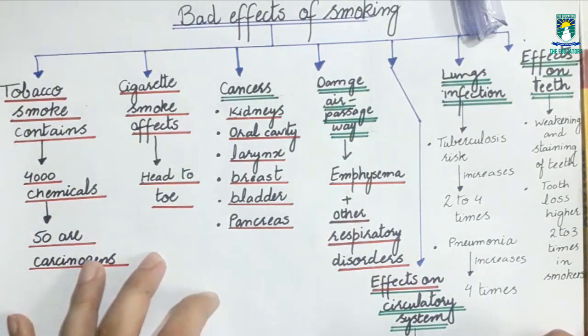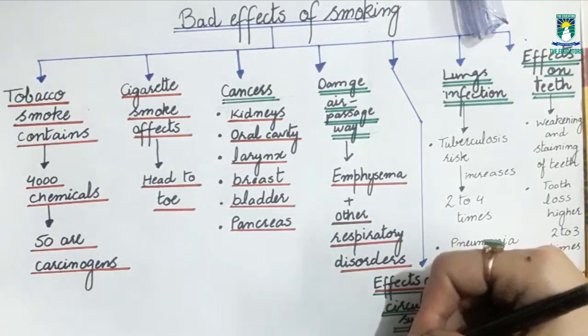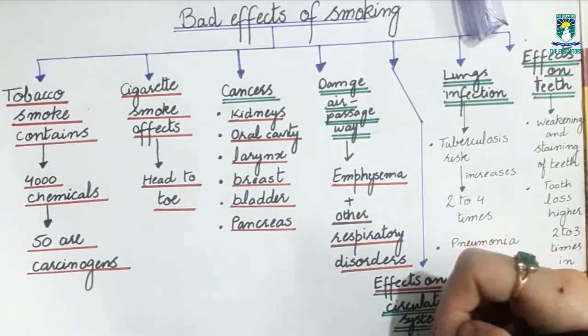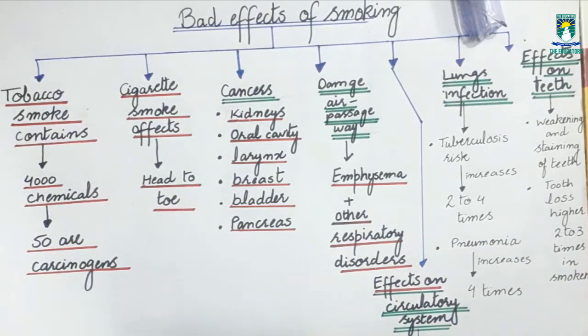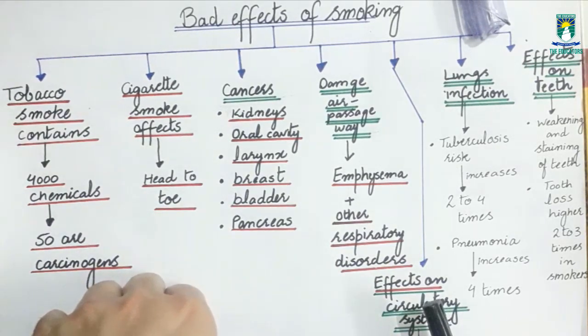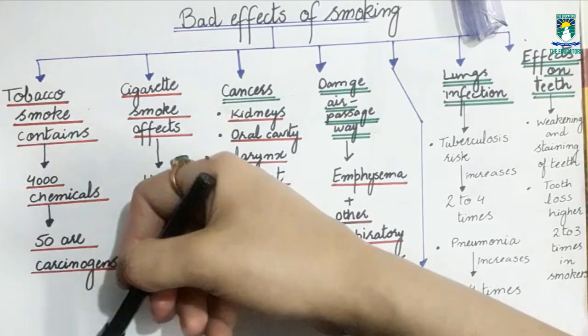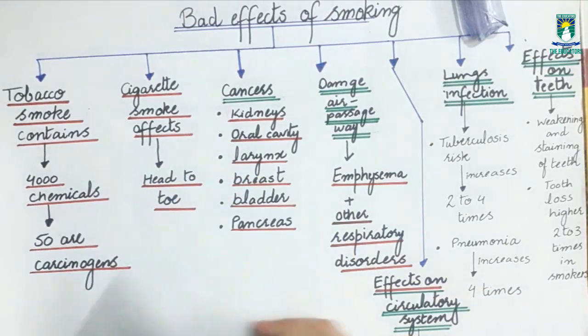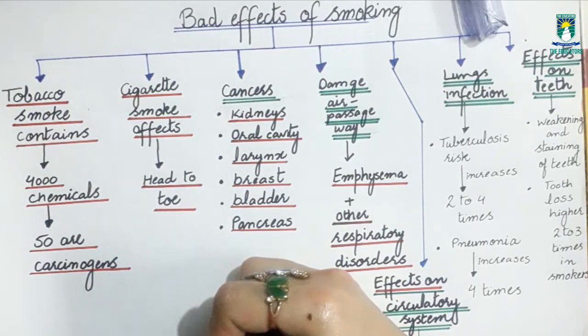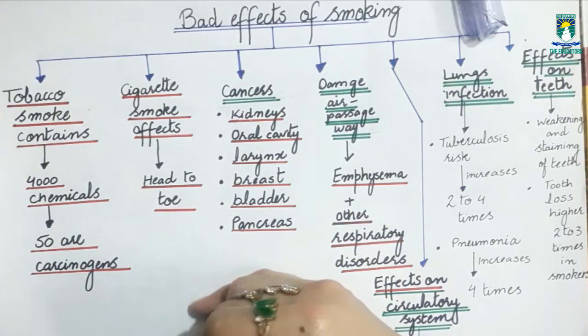Cigarette smoke contains chemicals that increase the production of platelets. When your platelets are increased, your blood becomes viscous or thick. Due to this thickness and increased production of platelets, your blood becomes thick and you can develop a disease called arteriosclerosis. Arteriosclerosis is a disease in which your arteries that carry oxygenated blood have walls that become hard.